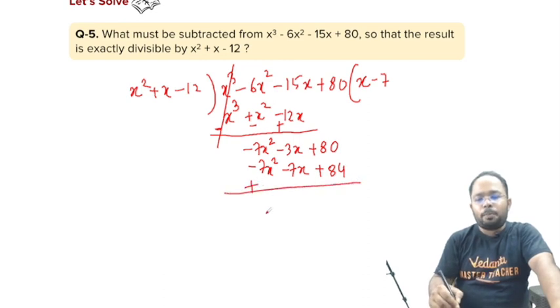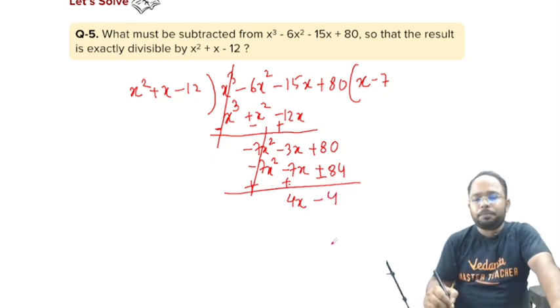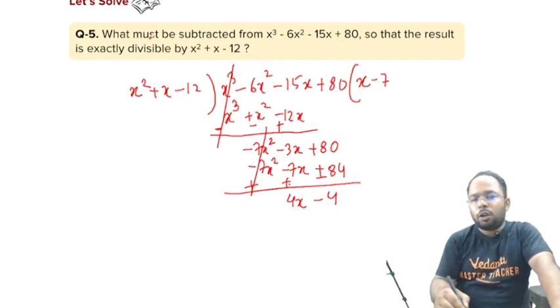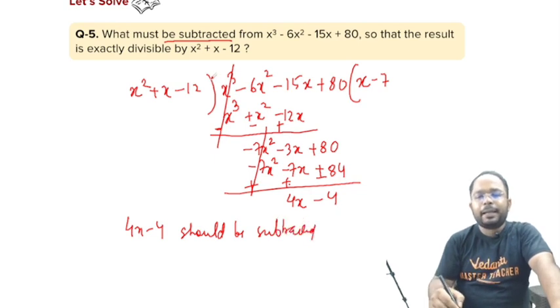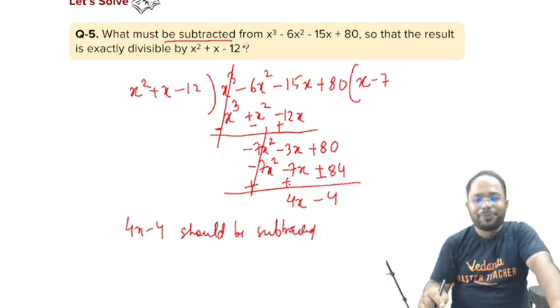Plus, plus, plus, minus, so this gets cancelled, +7 - 3, that is positive 4x minus, so this is the remainder we are getting. This is the extra part, so what must be subtracted, so 4x - 4 should be subtracted, to get it divided completely by x² + x - 12.